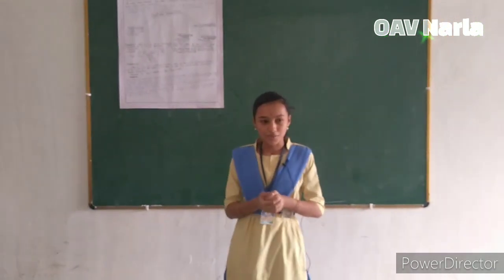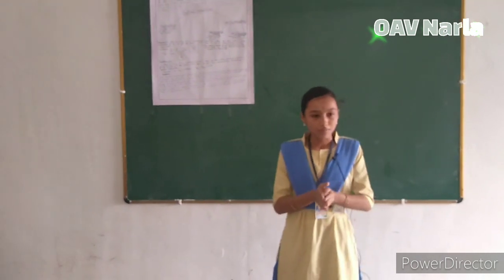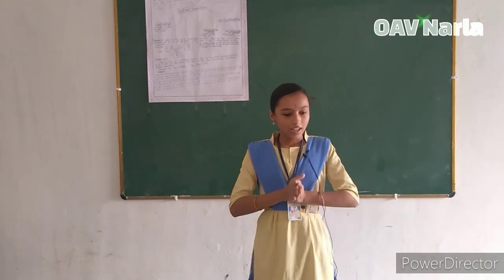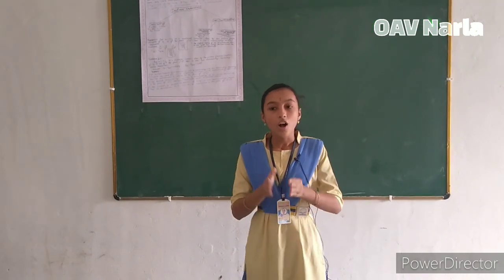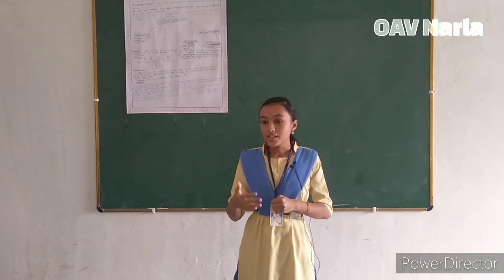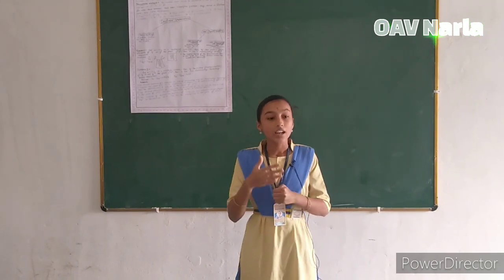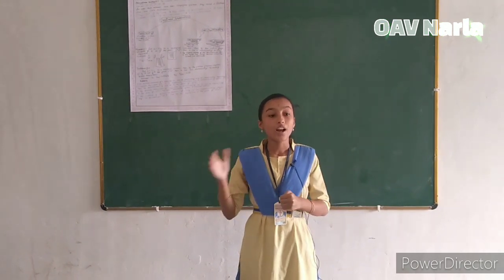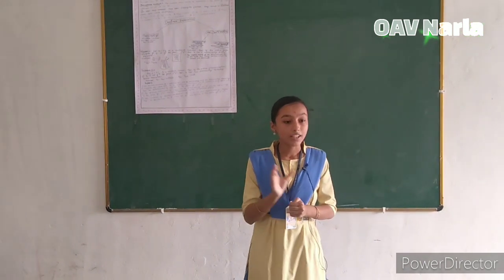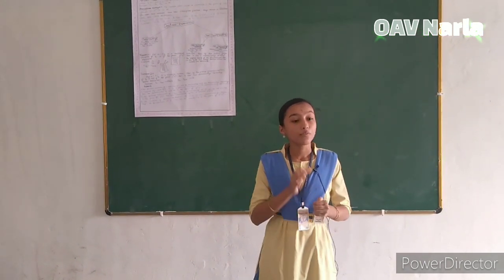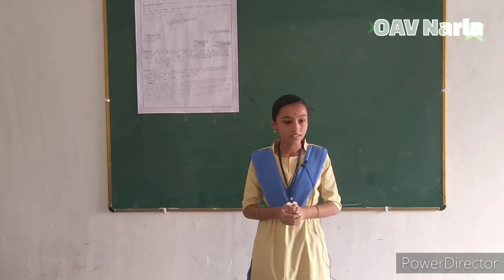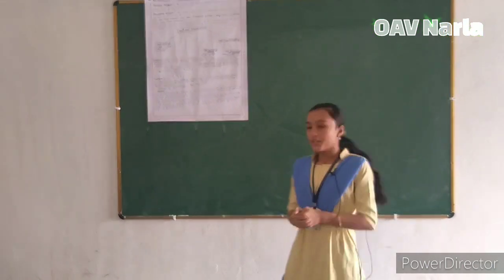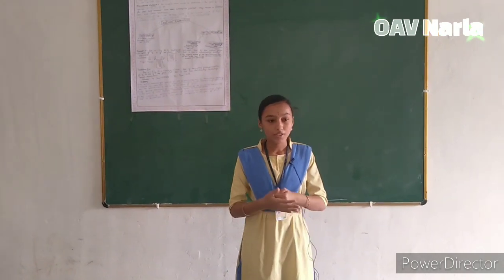Let us quickly visit the theorems. We have two theorems. Theorem 1 tells us that if the prime factorization of the denominator of a rational number can be expressed in the form of 2^m × 5^n, then it will terminate. And the highest power of the denominator of the rational number will tell us after how many decimal places it will terminate.